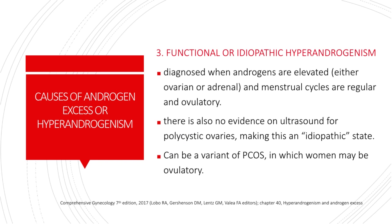The third cause of hyperandrogenism is functional or idiopathic hyperandrogenism. This is diagnosed when androgens are elevated either from an ovarian or adrenal source and menstrual cycles are regular and ovulatory. There is also no evidence on ultrasound for polycystic ovaries, making this an idiopathic state. This can be a variant of PCOS in which women may be ovulatory.